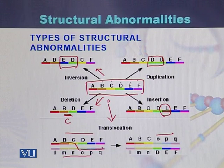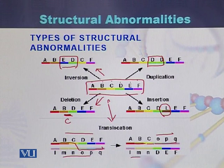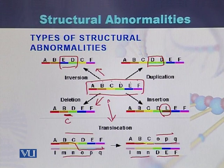On the original chromosome they will join in such a way: A, B, C, then O, P, and Q. The same will occur on the other chromosome where L, M, N and the fragments are joined with D, E, and F. If the chromosomes exchange their fragments between non-homologous chromosomes, it is called translocation.